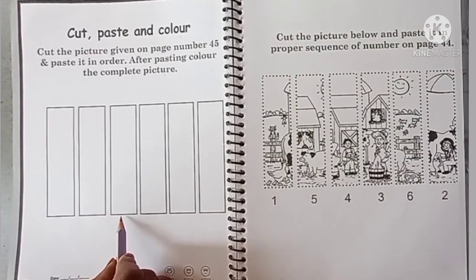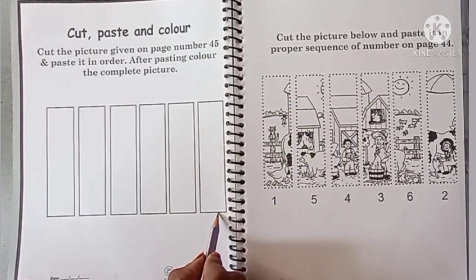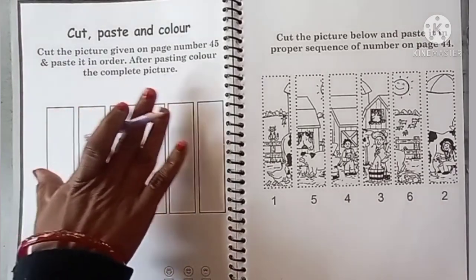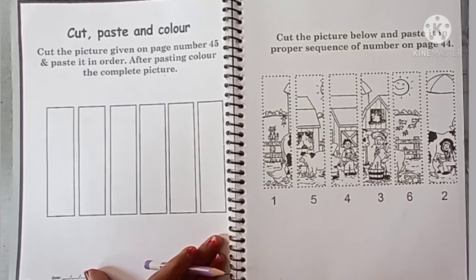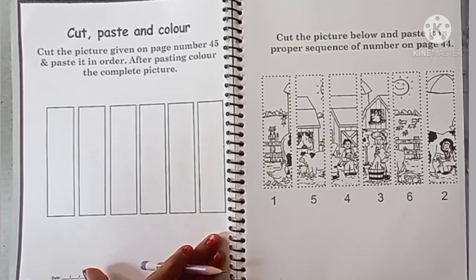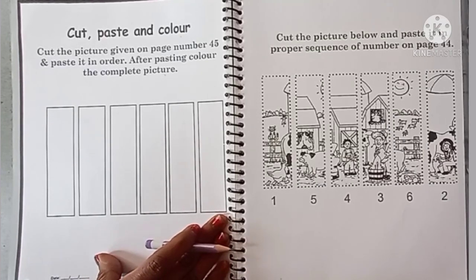And after that number 3, we will paste it in the number 6. So you will paste in your entire farm picture to complete the farm scene, and after that color it beautifully.